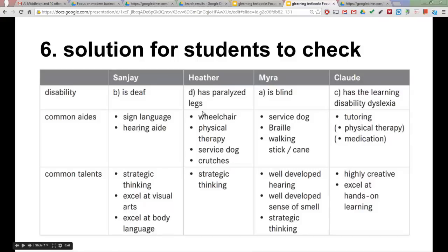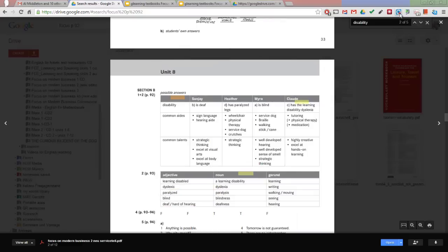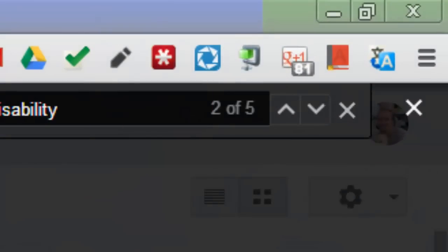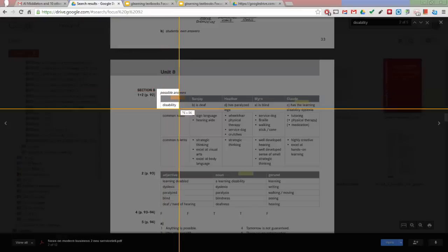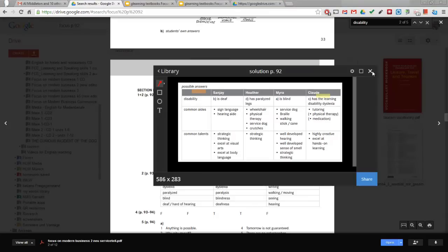Number 6: Solutions for the students to check. Sometimes you just don't want to write everything on the board, but you just want to give the students the solutions from the teacher's book. I've got a digital copy of the teacher's book in my drive. I simply cut out the solution with the Snagit extension for Chrome browser, and it automatically saves it to my drive.